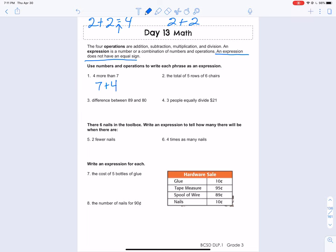Number two, the total of five rows of six chairs. Okay. The word rows that clues me in to, that makes me think of an array and arrays that makes me think of multiplication. So five times six, that would be the answer for number two.